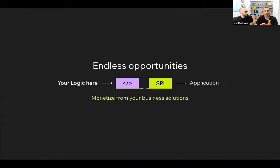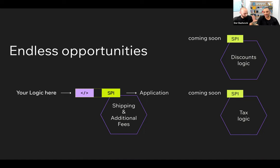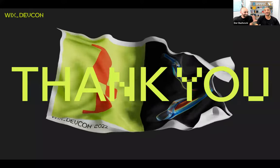Soon you can also monetize from it — not only creating customizations for a specific site with Velo, but also creating an app that connects to and implements those SPIs, working with our e-commerce platform sitting on the app market that any Wix user can install. This lets you answer the needs of a whole segment rather than just a specific site. Coming soon: the discounts logic SPI — a long-awaited SPI that will let you affect both the trigger and the discount amount — followed by the tax logic SPI later this year.